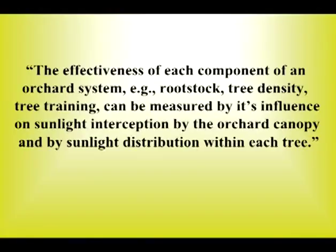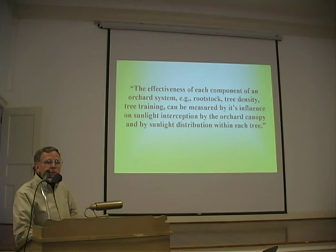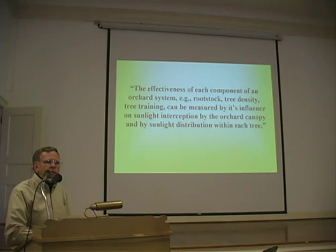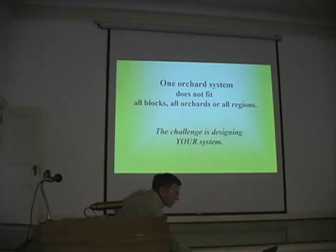The effectiveness of each component — rootstock, tree density — can be measured by its influence on light distribution and light interception. Choosing a dwarfing rootstock, for example, ensures the canopy is relatively small and you have good light distribution. Choosing a more vigorous rootstock produces a larger tree and will increase light interception. So each component's success in contributing to the orchard system depends on its contribution to light interception and light distribution.